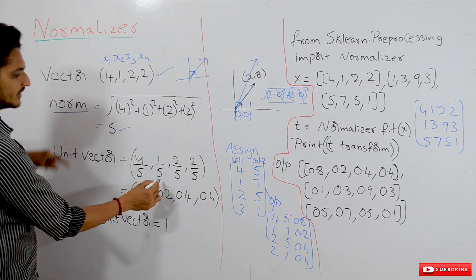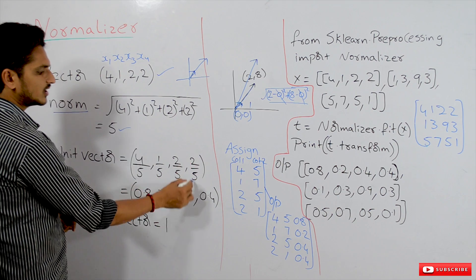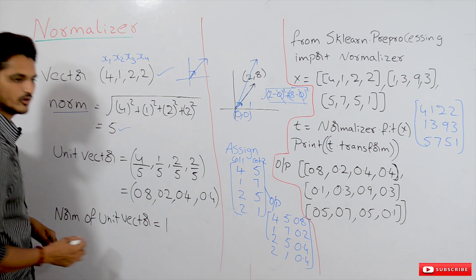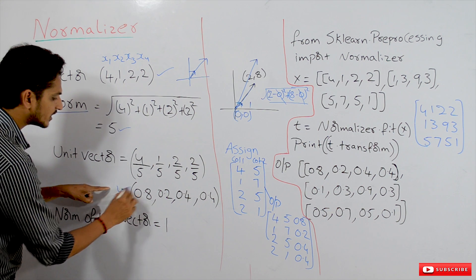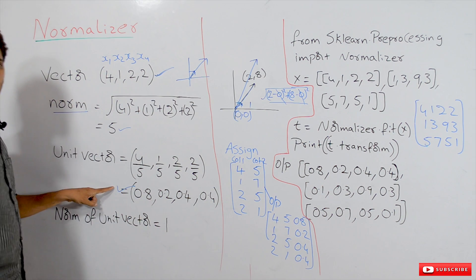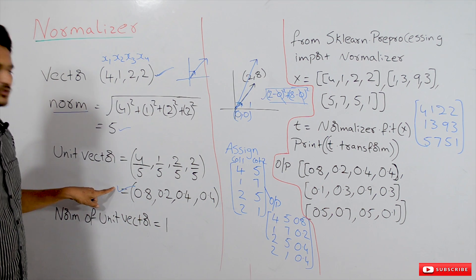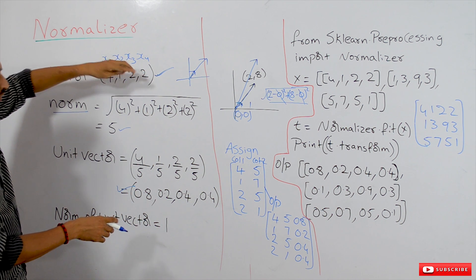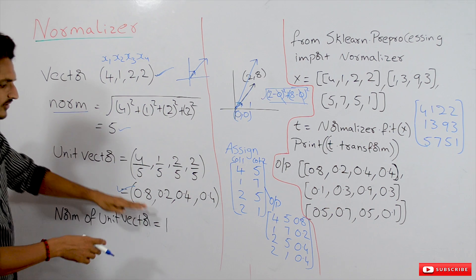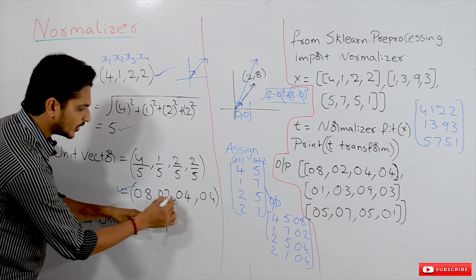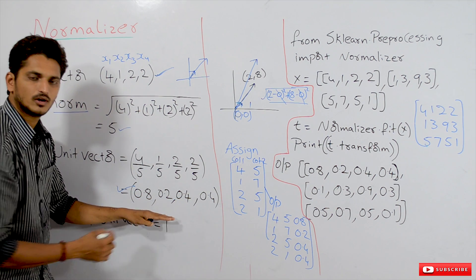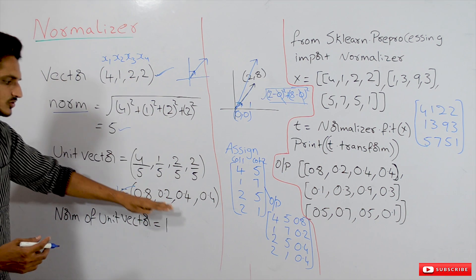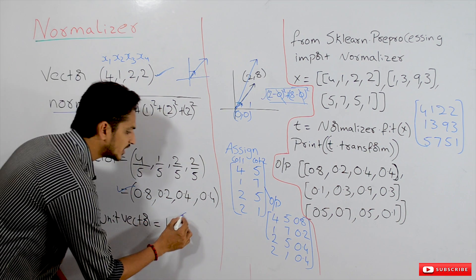For vector (4, 1, 2, 2) with norm 5: divide each component by 5 — 4/5, 1/5, 2/5, 2/5 — giving us 0.8, 0.2, 0.4, 0.4. This is the unit vector of that vector. So we have scaled down the original values (4, 1, 2, 2) to values between 0 and 1. This is exactly the scaling we need, since the problem with numerical values is that each column is on a different scale.